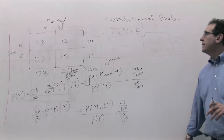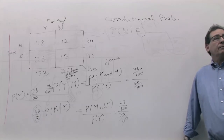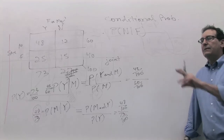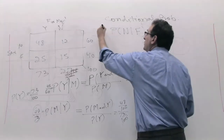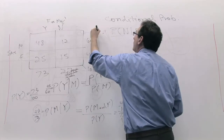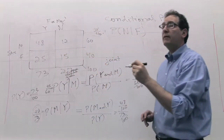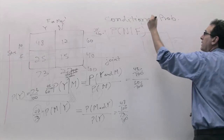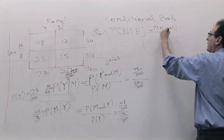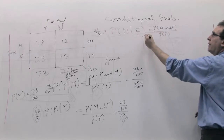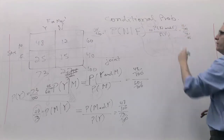The answer is 15 out of 40. The person is definitely a female, so we're talking about these 40 people, and 15 of them are non-finance majors. To do it by formula: P(N and F) divided by P(F) equals 15 over 100 divided by 40 over 100, which gives 15 out of 40. The right side of the vertical bar always goes to the denominator.